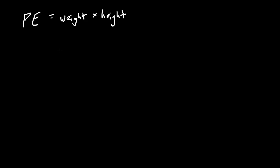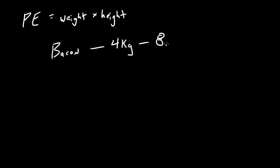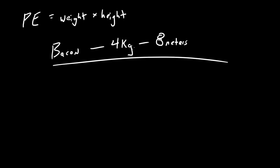Say that we have a piece of bacon — actually this 'b' right here kind of looks like a piece of bacon, the way it's wavy and greasy and delicious. Anyway, we have a piece of bacon that has a mass of four kilograms, so it's probably a good size piece of bacon, and it's also eight meters off the ground. We'll say that it's sitting on a pole, and we're trying to knock it down so we can of course get it in our mouths.